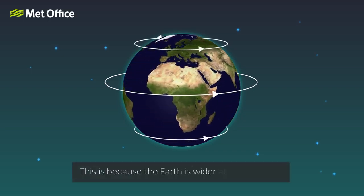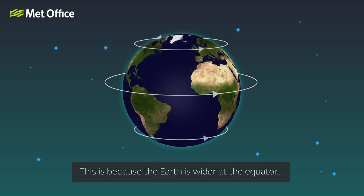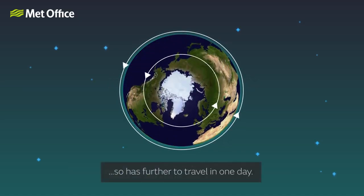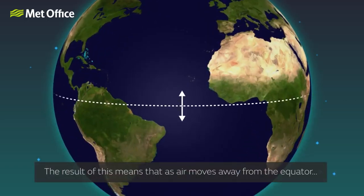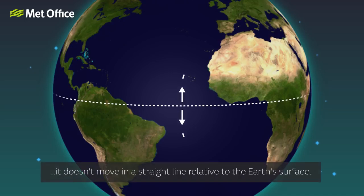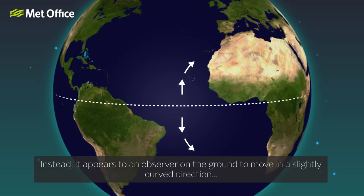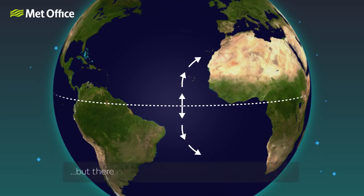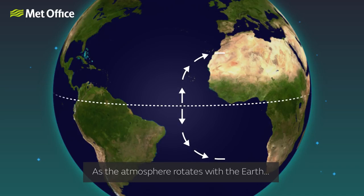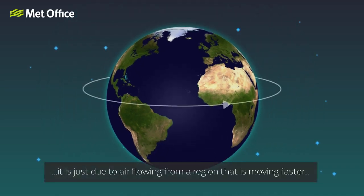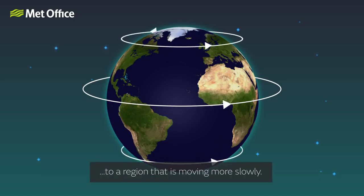This is because the earth is wider at the equator, so it has further to travel in one day. The result of this means that as air moves away from the equator, it doesn't move in a straight line relative to the earth's surface. Instead, it appears to an observer on the ground to move in a slightly curved direction. But there is no physical force causing this deflection — it is just due to the air flowing from a region that is moving faster to a region that is moving more slowly.